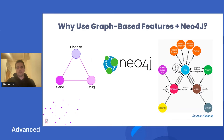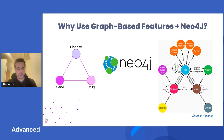Why use graph-based features in Neo4j for a gene recommendation system? The reason is because biology naturally conforms to a network. Inside the cell, molecular biology is naturally a system — a network where all the genes are interacting with each other. No gene is acting in isolation. Genes interact with each other, have effects on each other, and have relationships with diseases and drugs. All of these interactions together form the molecular biology of a cell, so a graph is a great way to get as close to biology as possible.